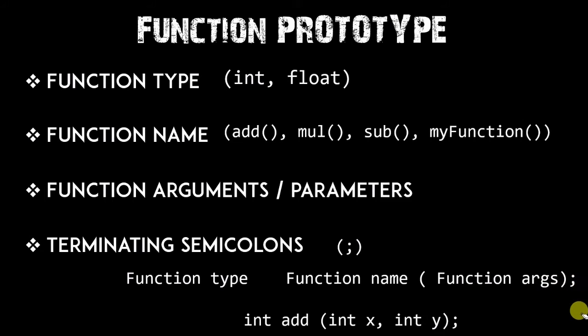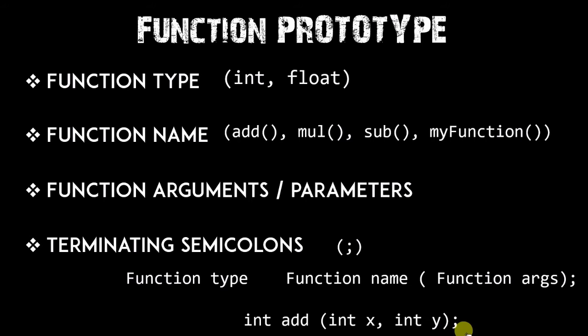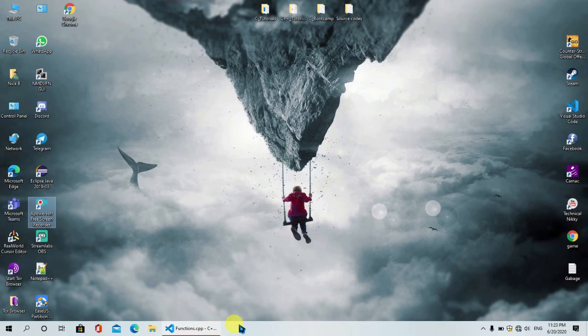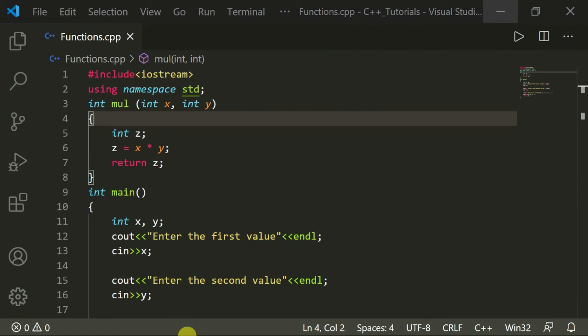Here is an example: 'int addition(int x, int y)' — here the function type is integer, the function name is 'addition', and the function arguments are int x and int y. You can also use int z and more. I have terminated it with a semicolon.